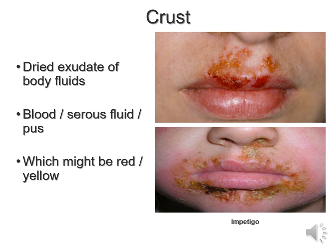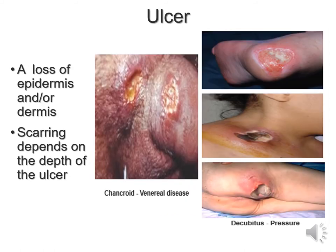Crusts are dried exudates of body fluids — blood, serous fluid, or pus — and they can be red, yellow, or brown. Impetigo is an example. You can also encounter crusting wherever you work — gerontology, intensive care, chronic home care areas, or anywhere where circulation could be compromised.